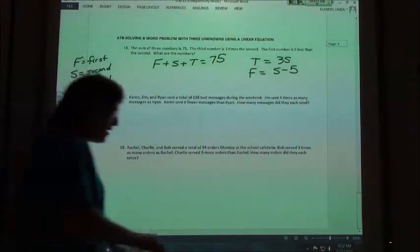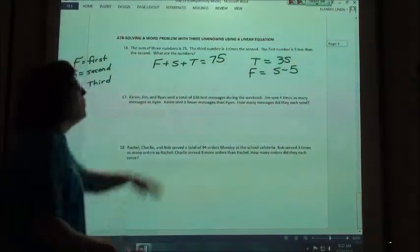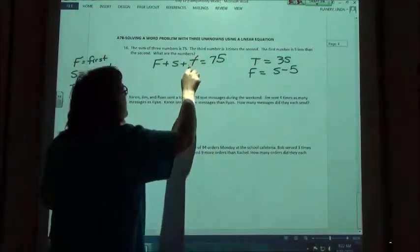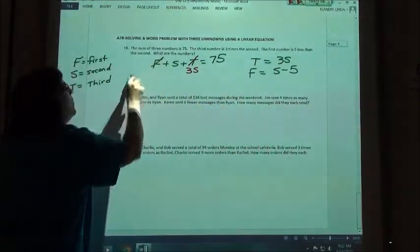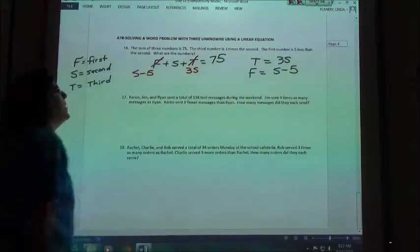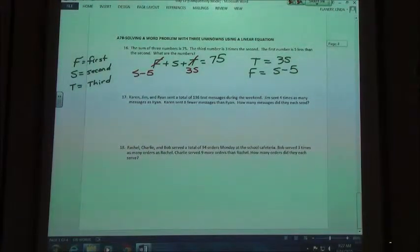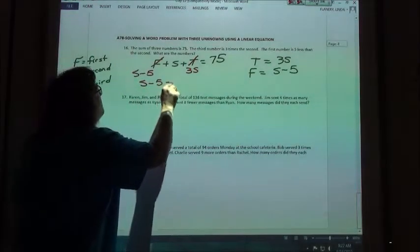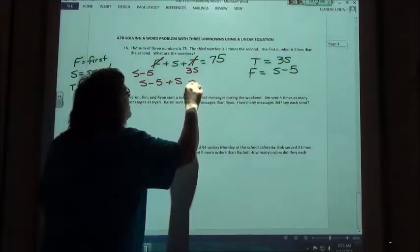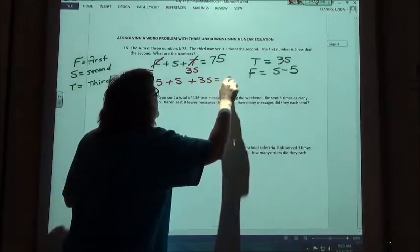So these ones are going to solve by using substitution. We're going to replace the T with three S's, and we're going to replace the F with S minus five. Now, they probably put parentheses around everything, but since I'm adding, I really don't need them. So I'm going to have S minus five plus the S in the middle, plus three S's equals 75.